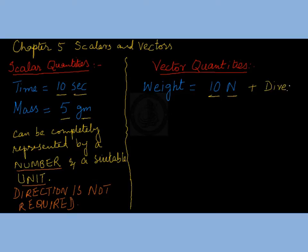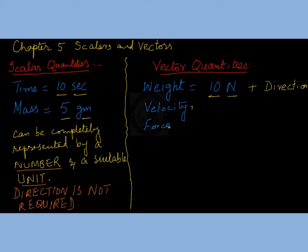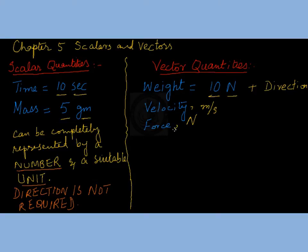This is specifically the case with vectors, and there are many other examples. For example, velocity has a direction, with a unit of meter per second. Force is another example, with a unit of newtons. These are the most common examples of vector quantities.